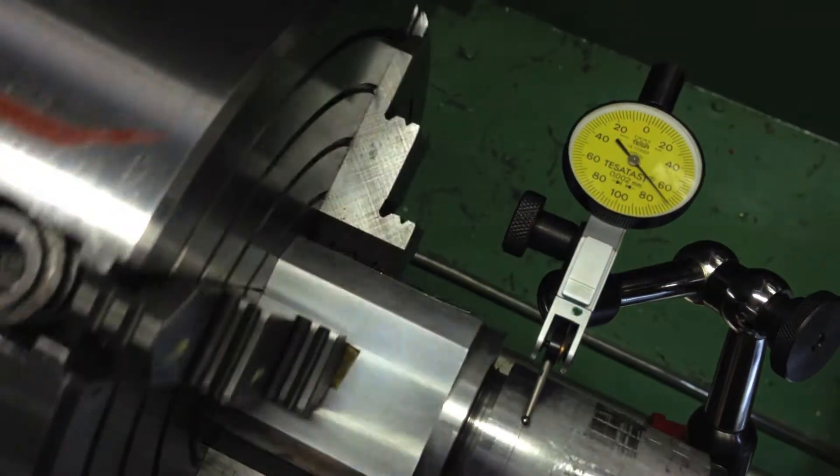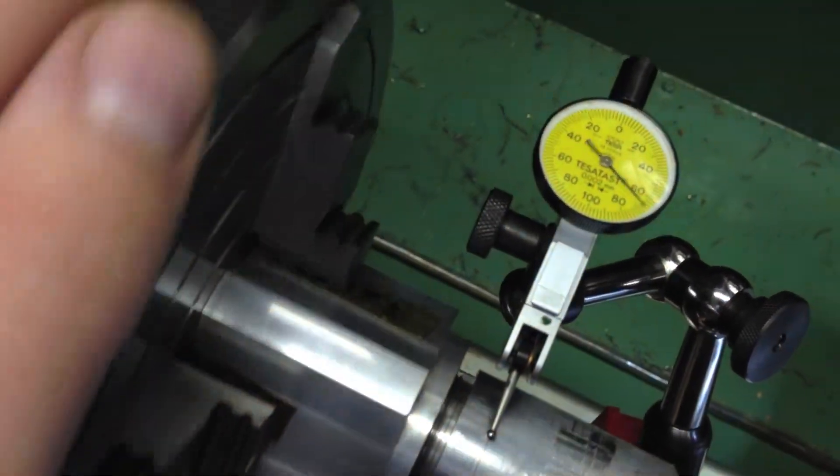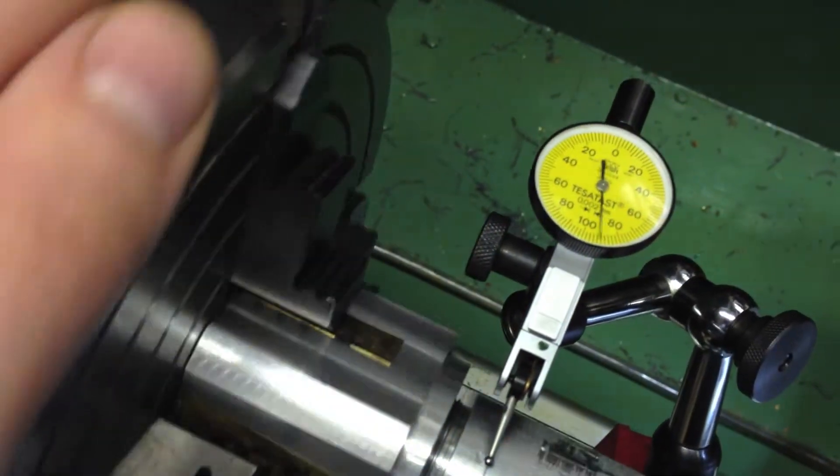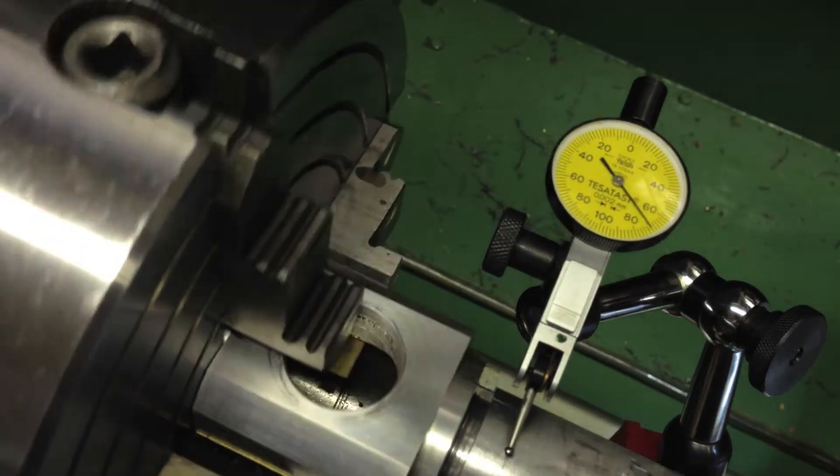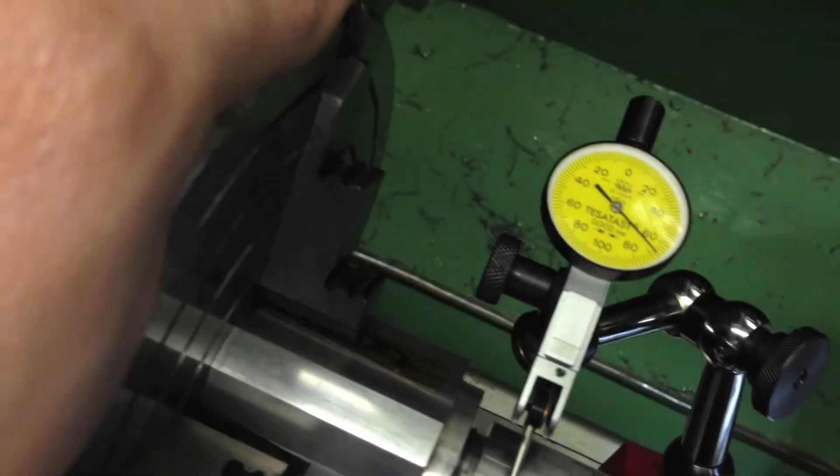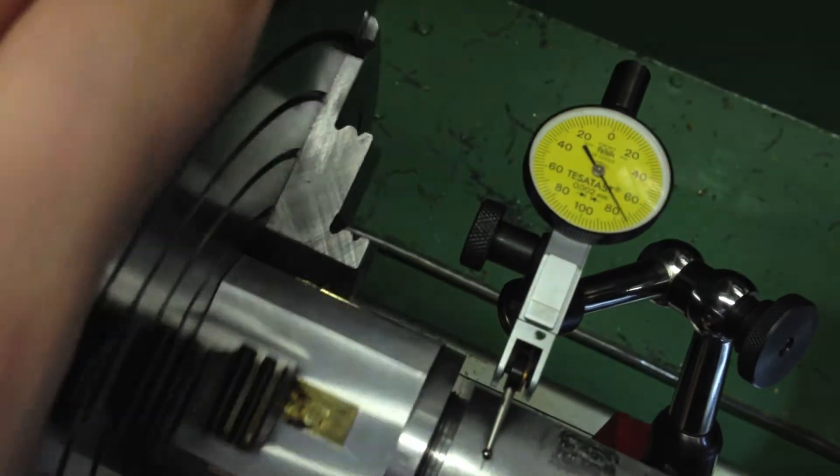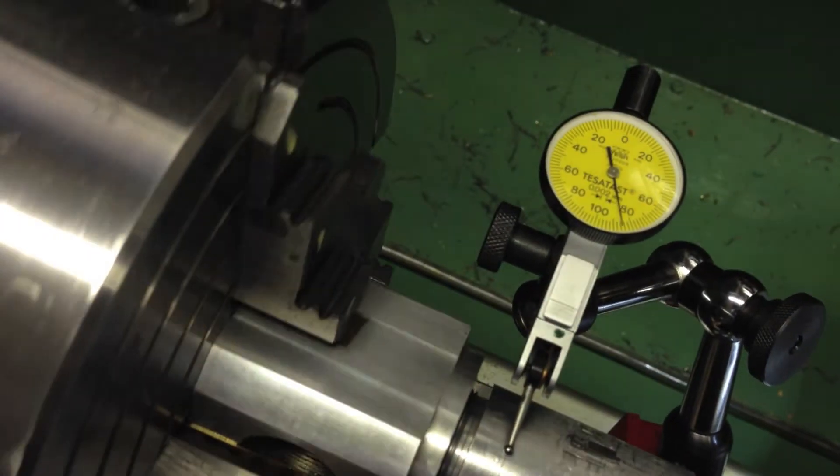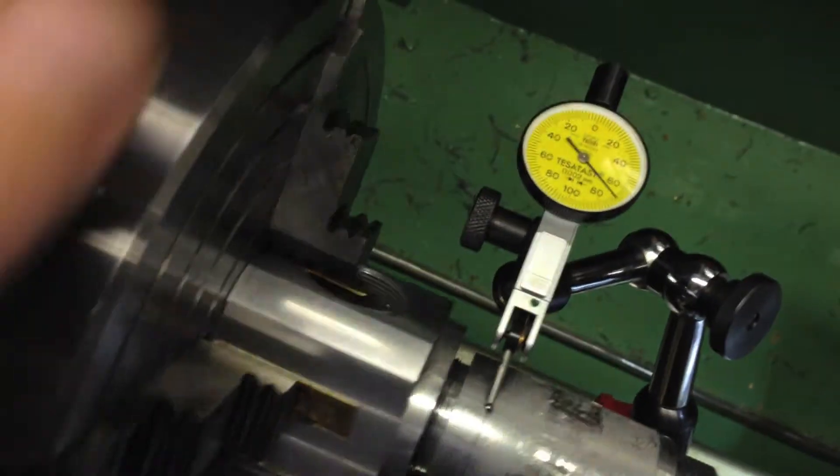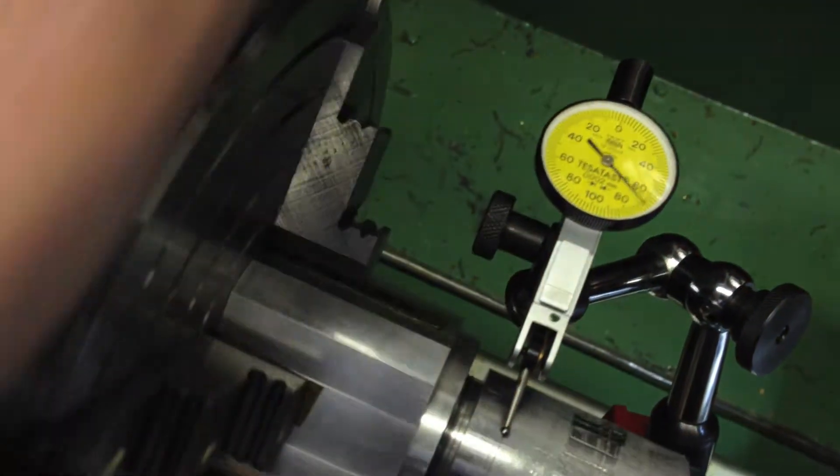But you can see that I'm reading about, I would say about 15 microns, which is much, well, it's less than a thousandth of an inch. A thousandth or one thou is about 25 microns. And this is reading 15 microns. So I've clocked it to within less than one thou.